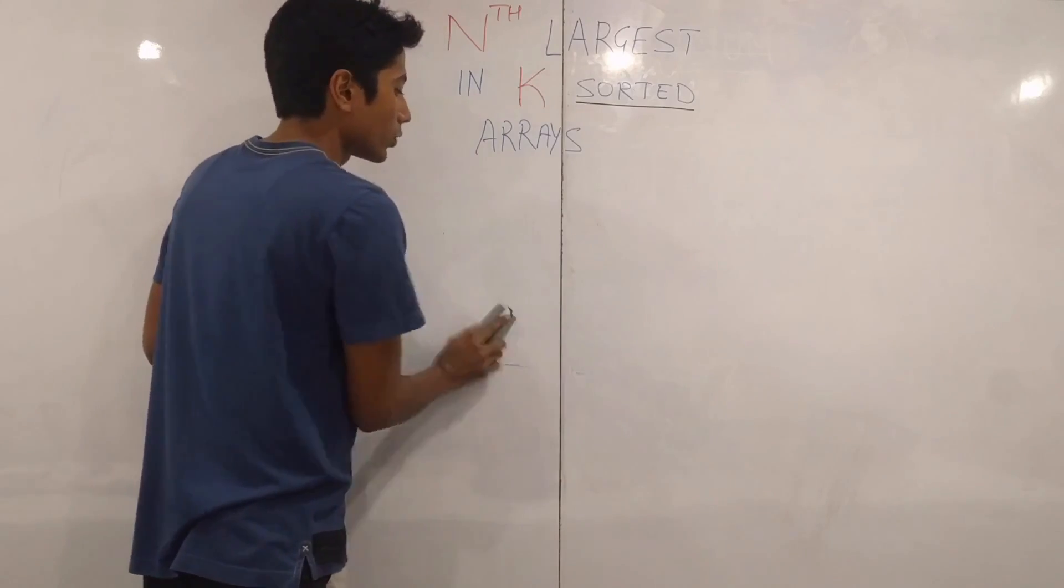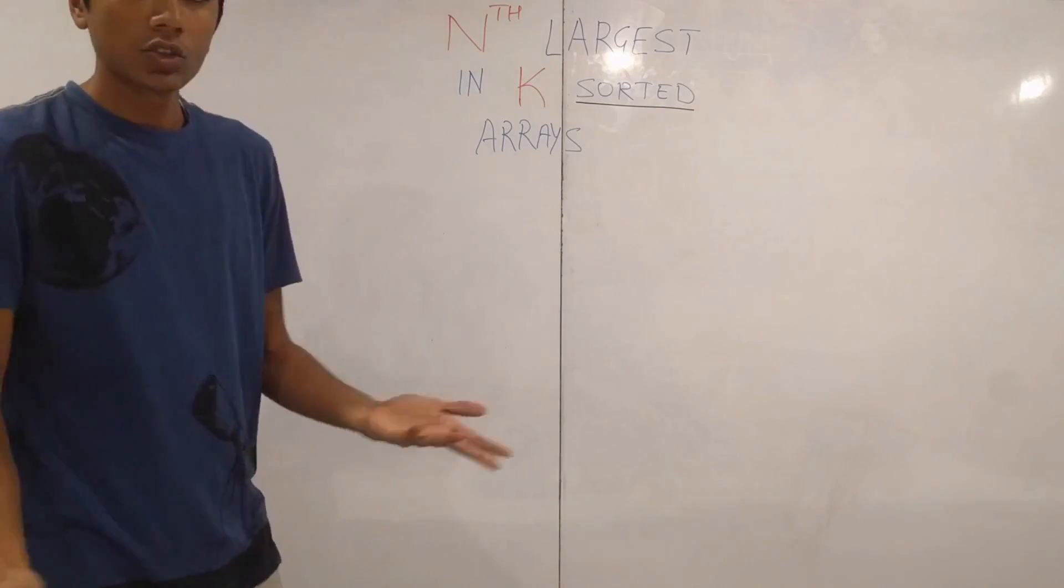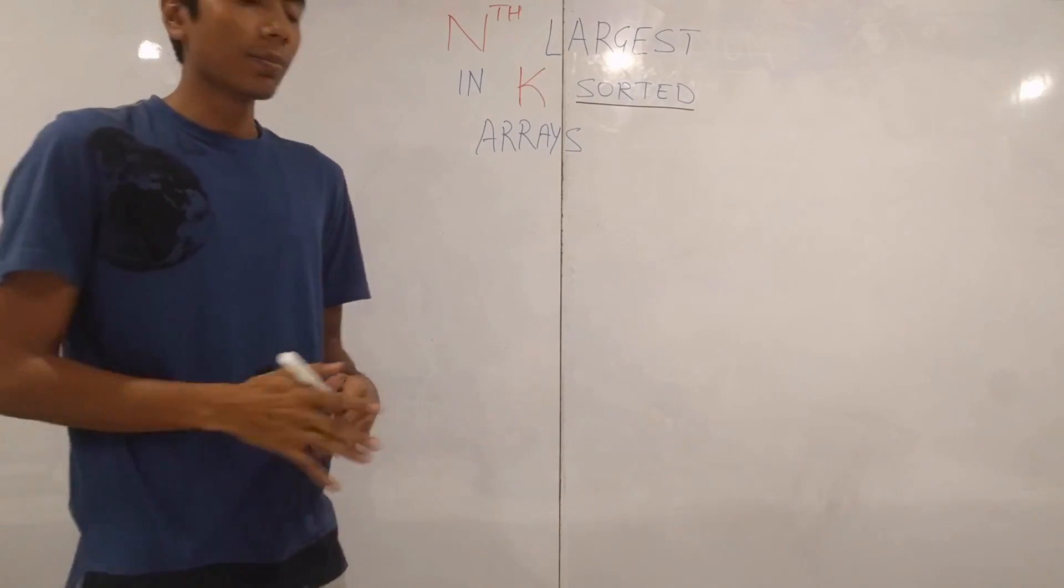So one of the brute force approaches is to just take all the arrays, sort them and then choose the kth element which is pretty dumb so we won't look into that.